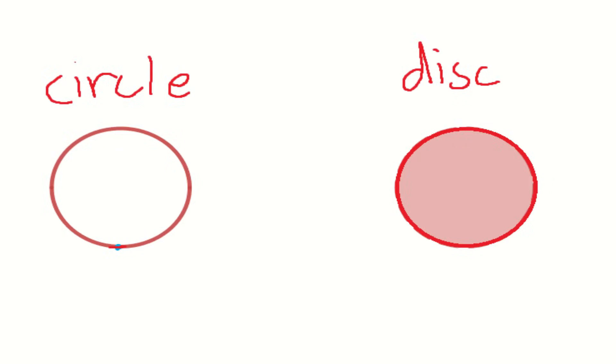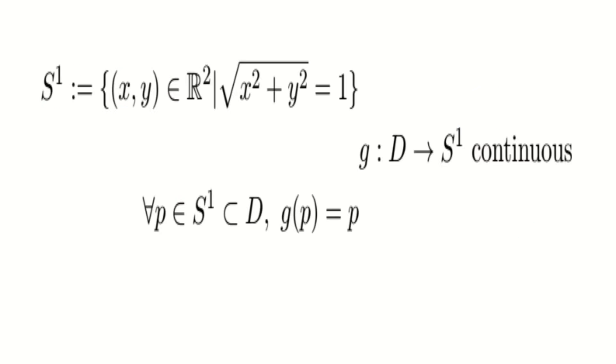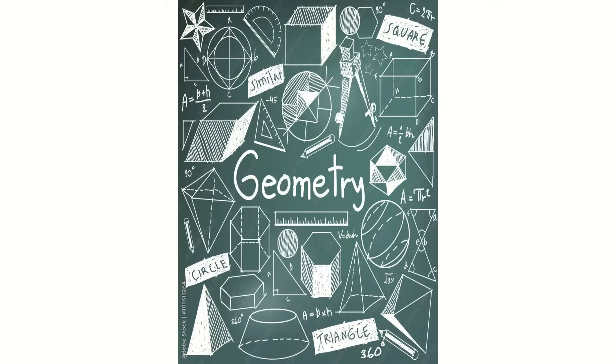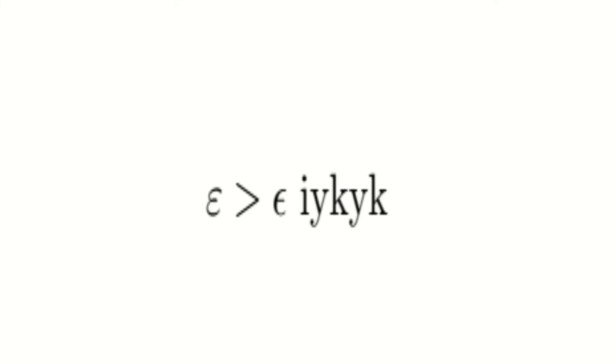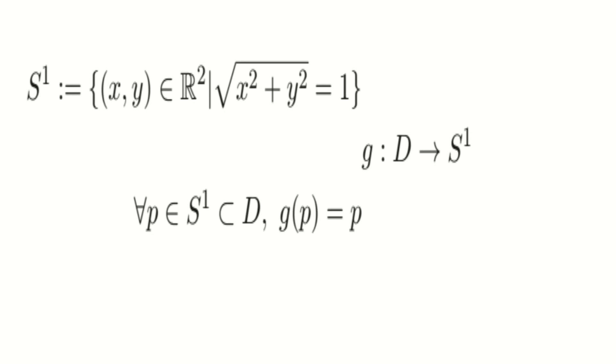Remember, the disk is just the circle, but with everything inside of it. The circle is just the boundary line. I'll skip the details, but using some geometry and some carefully chosen epsilons and deltas, we can show that G is also continuous.